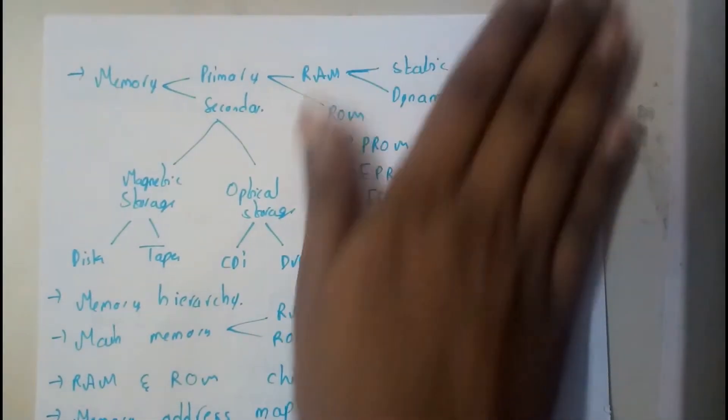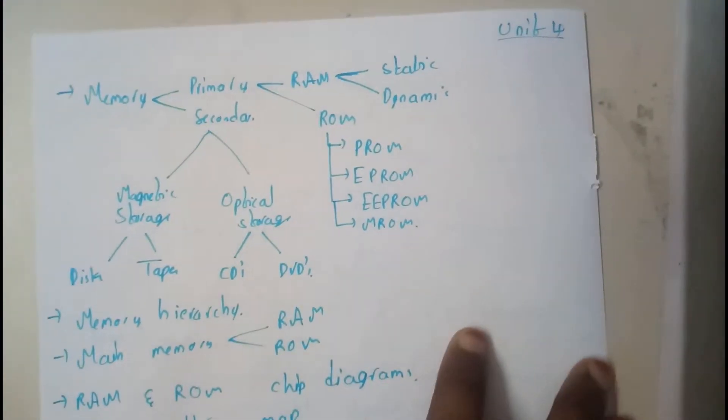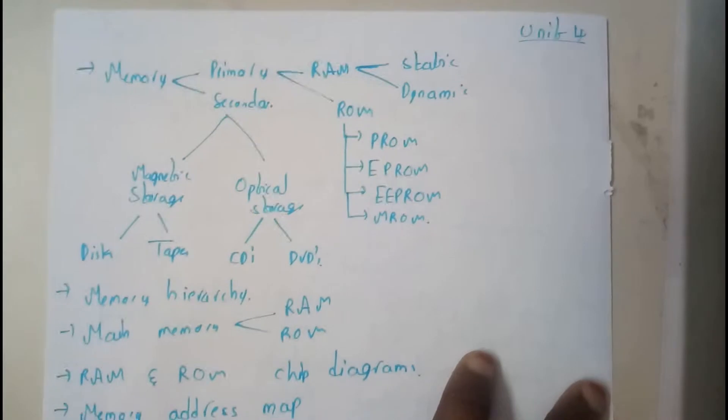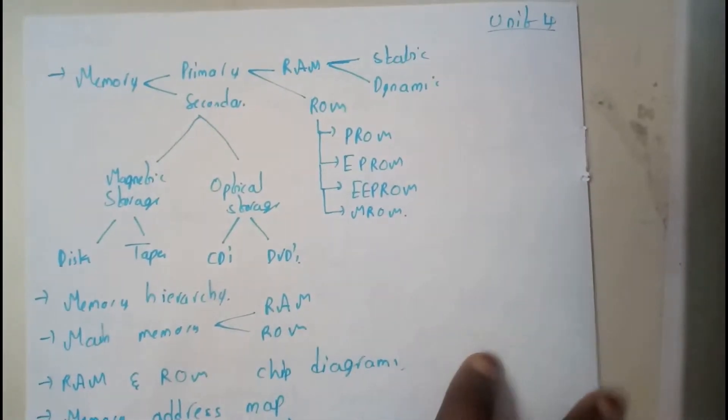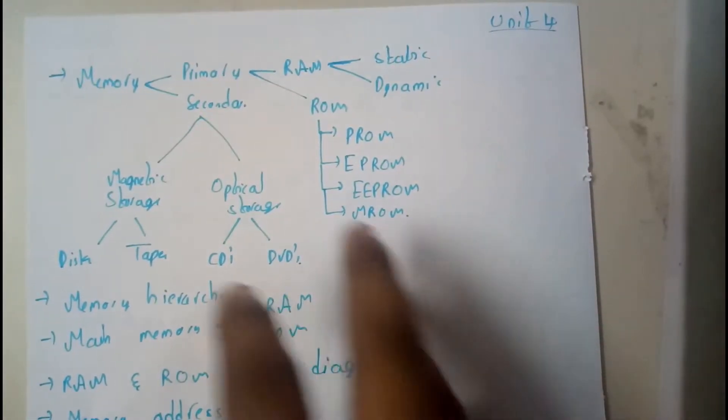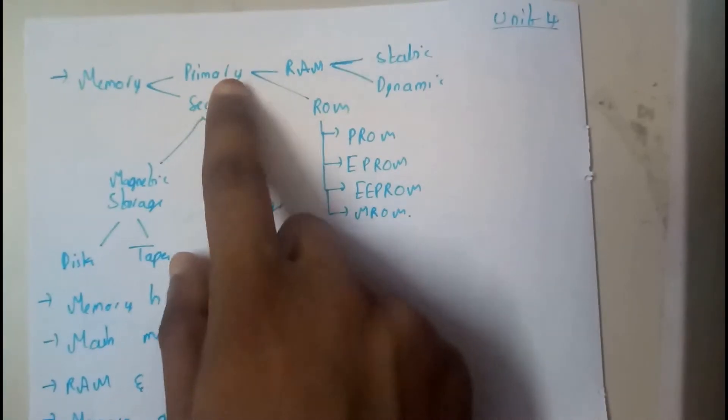Hello guys, we are back with our next review tutorial. In this tutorial we have just completed the fourth unit of computer organization, in which we discussed about memory, which is divided into primary and secondary. Primary is further divided into RAM and ROM.